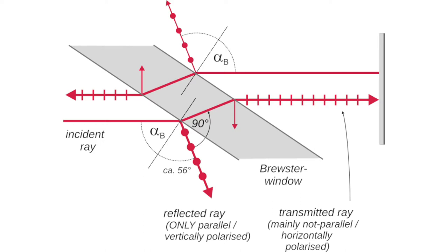This minimizes intensity loss when light enters or leaves the windows. Another consequence is that the outgoing light is linearly polarized in a direction that is not parallel to the plane of incidence.